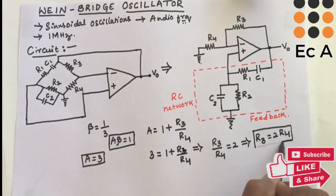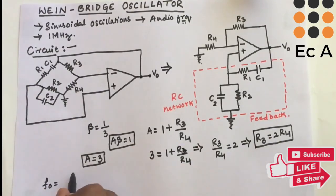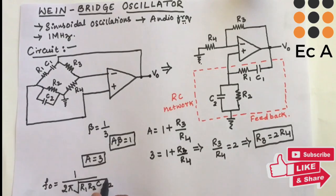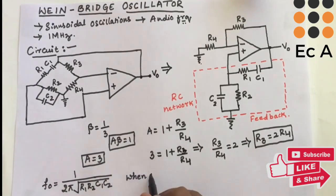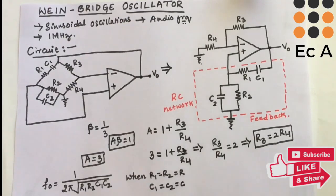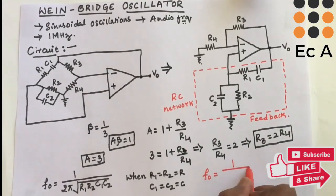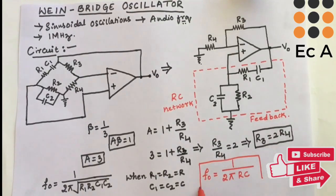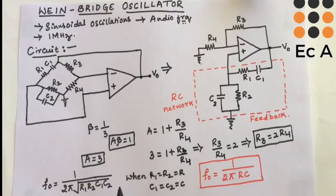The frequency of oscillation of this circuit is f₀ = 1 / (2π√(R1·R2·C1·C2)). When R1 = R2 = R and C1 = C2 = C, the frequency simplifies to f₀ = 1 / (2πRC). This is the frequency of oscillation of the Wien Bridge Oscillator. Hope you have understood the topic. Thank you.